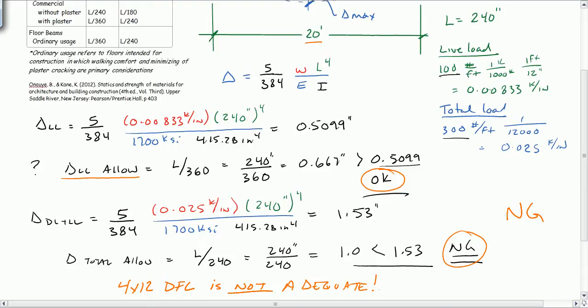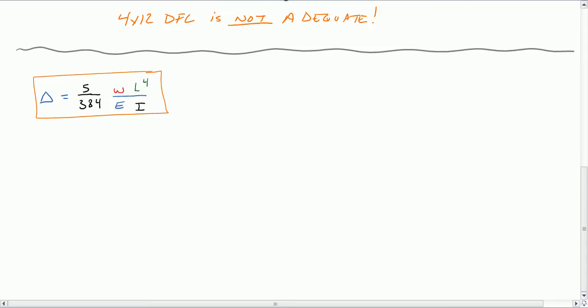So what do we do? Well, let's look at our equation right here. And let's see what we can do with this equation. Since the beam isn't big enough, what we're going to do is we're going to see what I do we need.